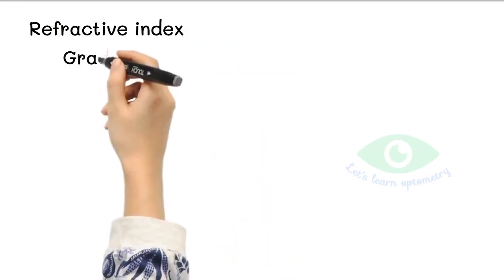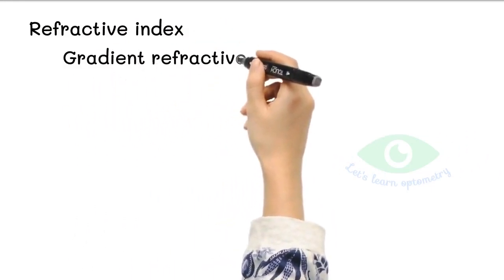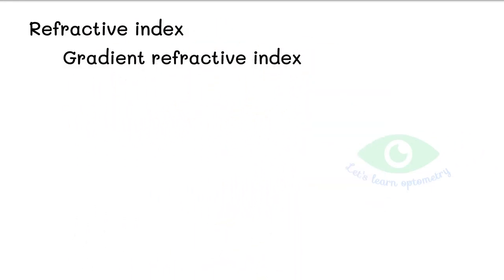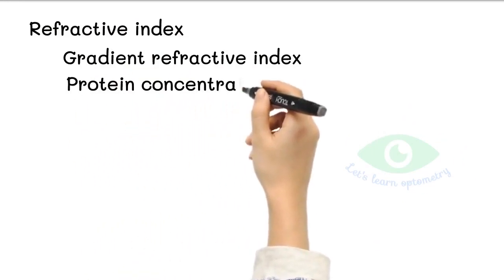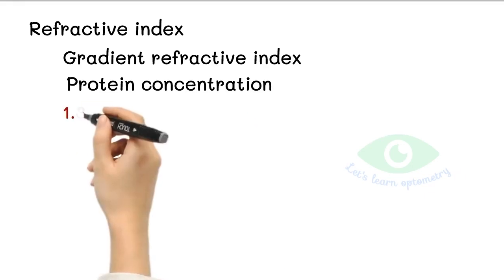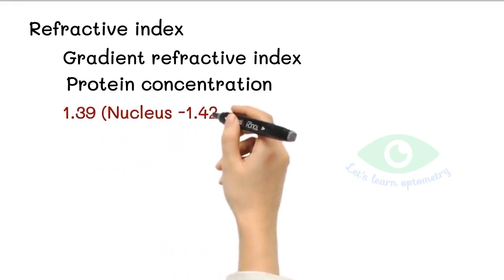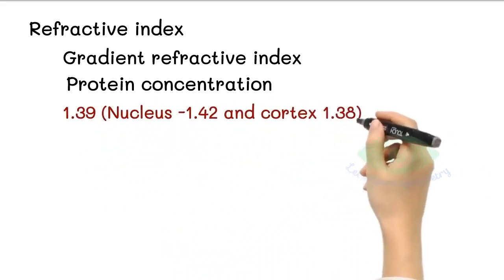Refractive Index: The lens has a gradient refractive index because of the changes in optical density throughout the lens. The refractive index is a factor of protein concentration within the lens fiber. The average refractive index of human lens is 1.39. The index of nucleus is 1.42 whereas the index of cortex is 1.38.